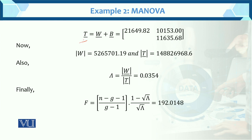Now total T = W + B — we add within and between sum of squares matrices to get T. Then we compute the determinants: |W| for within and |T| for total, because we need their ratio. Wilks' lambda equals the ratio of |W| over |T|. Once we have the determinants, Wilks' lambda value is obtained. We then substitute Wilks' lambda into the F statistic formula, and finally the calculated F value is obtained.